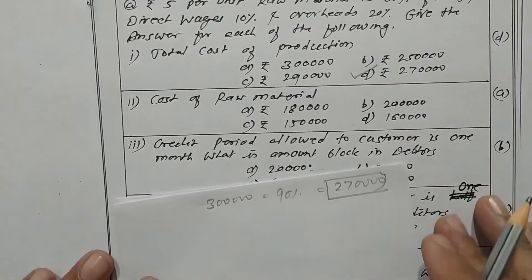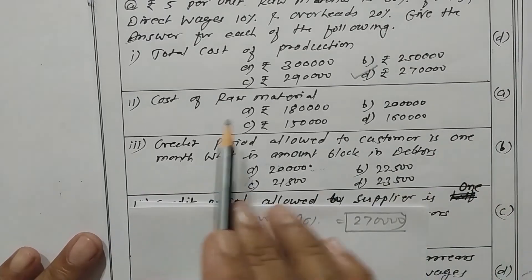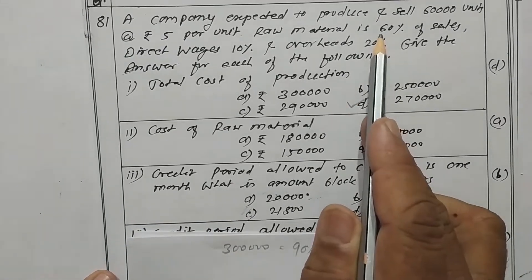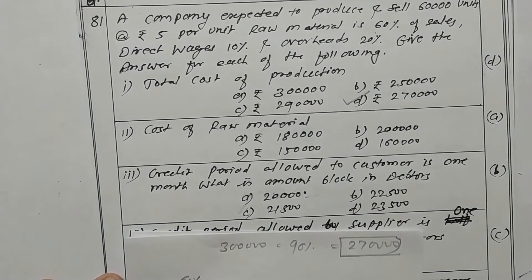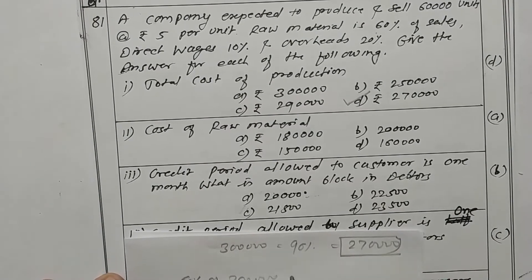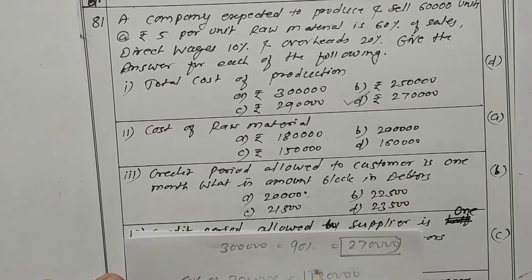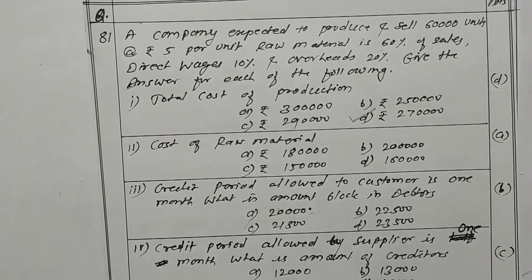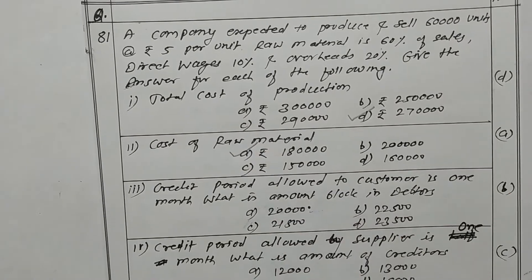Cost of raw material is 60 percent of sales rupees 3 lakhs, which comes to rupees 1,80,000 as raw material consumption. Option E is the correct one.